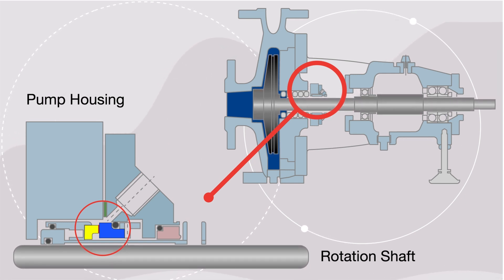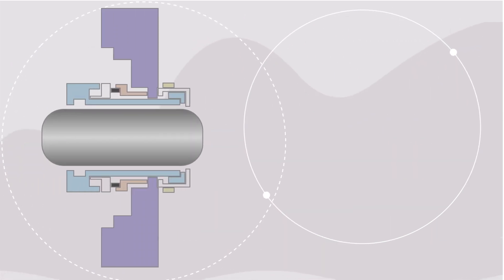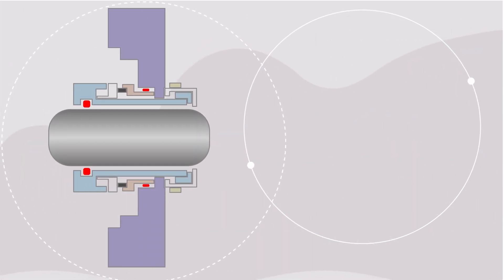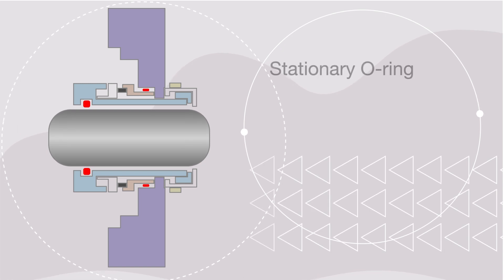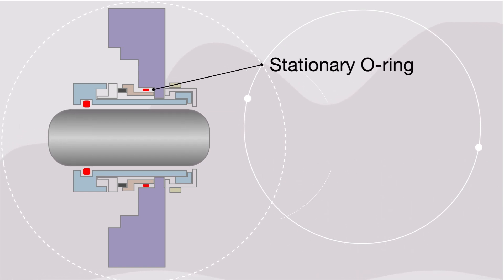Saving money and maintenance time. Within the static and rotating elements of mechanical seals, you'll typically find elastomer O-rings as secondary seals.